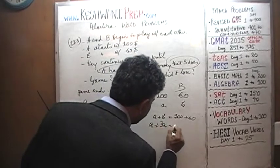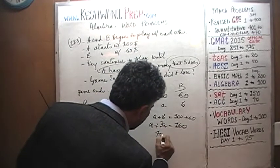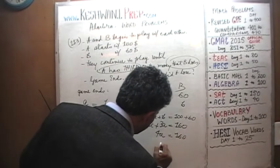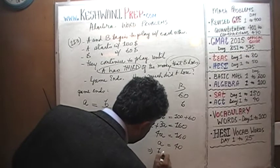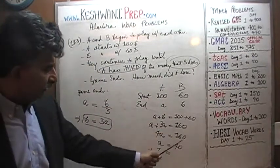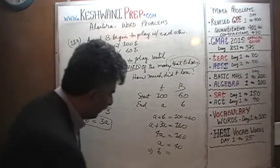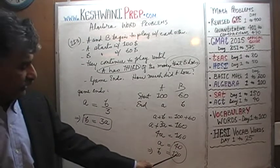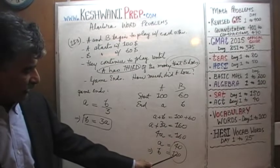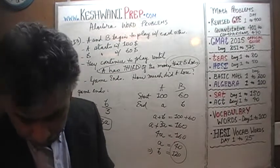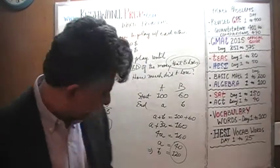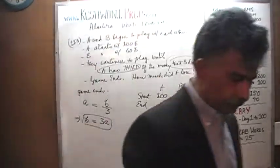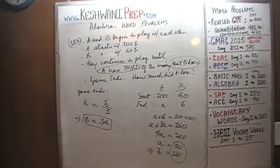So four a equals 160, which implies a equals 40. If a is 40, then b must be 120, since they add up to 160. This makes perfect sense — if B has $120 at the end, then A indeed has one third of the money that B does, or B has three times the money that A does. A started with $100 and finished with $40, so A lost $60. I'll see you tomorrow — bye now.